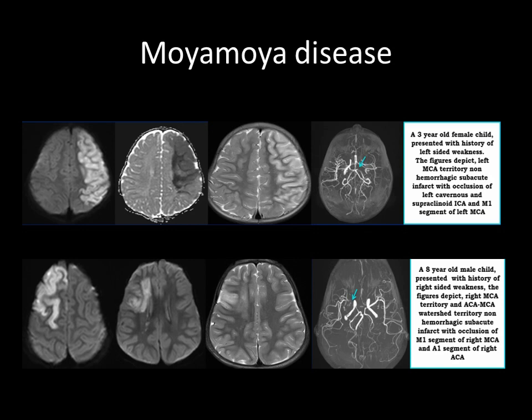In the first set of images, there was a three-year-old female child who presented with a history of left-sided weakness. These figures depict left MCA territory non-hemorrhagic subacute infarct with occlusion of left cavernous and supraclinoid ICA and M1 segment of left MCA.